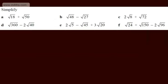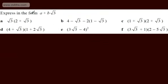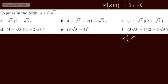OK, let's do something slightly different. We're asked to express in the form a plus b root 3. All we're doing is multiplying out brackets. For example, if we had 2 times (x + 3), we'd get 2x + 6. We do exactly the same with surds. So root 3 times 2 gives 2 root 3, then root 3 times positive root 3 gives 3.